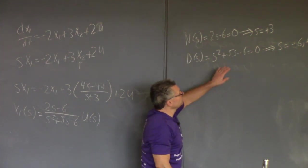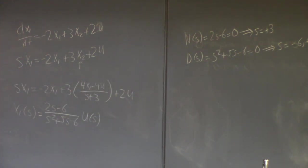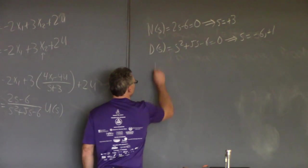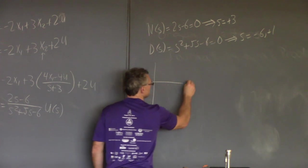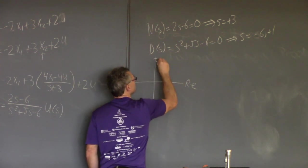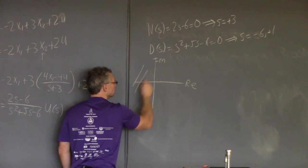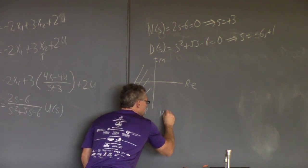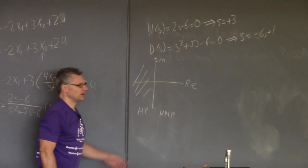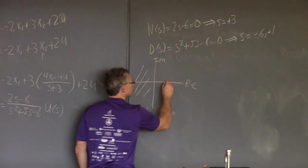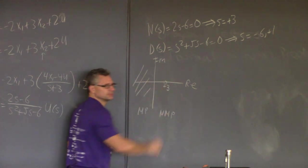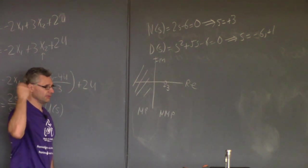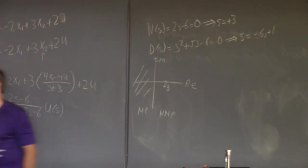To find the poles, you set the denominator polynomial equal to zero. We already know those — they're the same as the eigenvalues: s equal minus 6 and plus 1. Remember the idea of the system being minimum phase or non-minimum phase. If the zero has a positive real part, we call that non-minimum phase. Plotting the zero at plus 3, the system is also unstable, as we already knew.